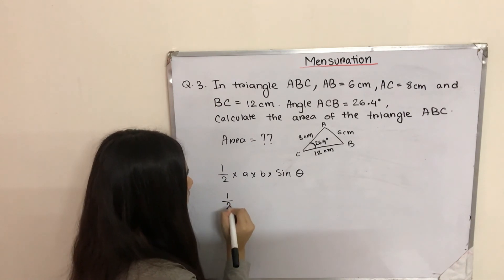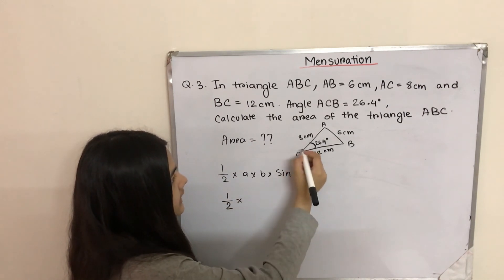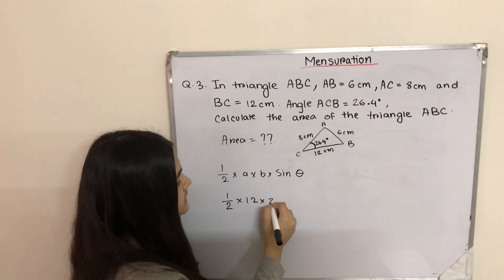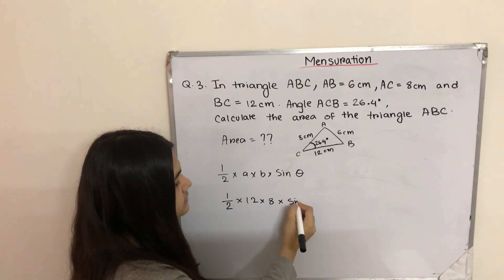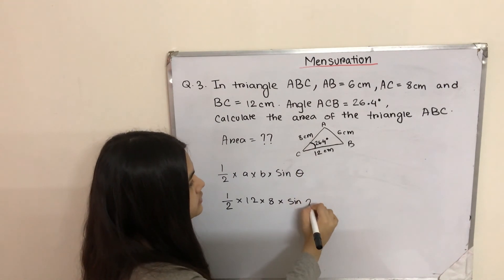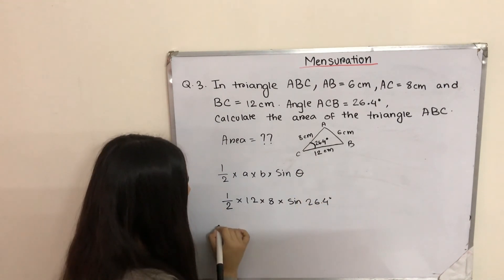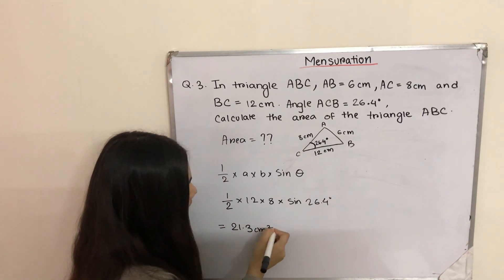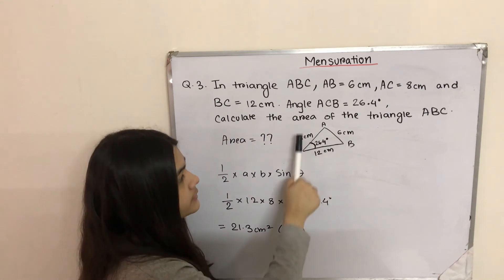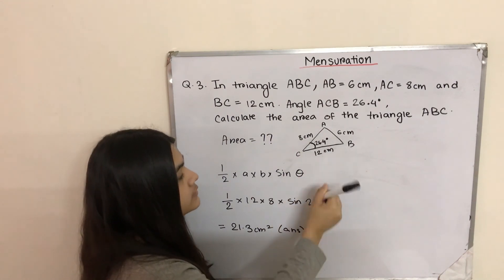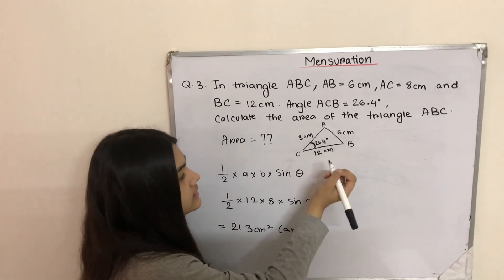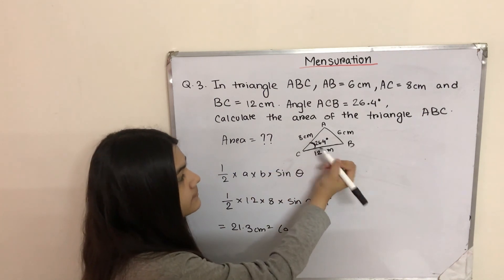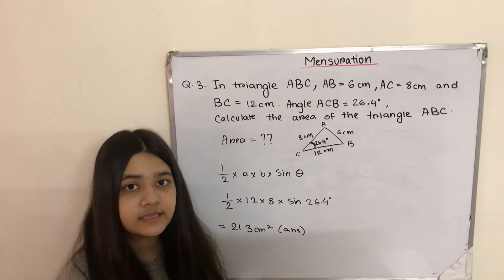Putting in the values: a equals 12 cm, b equals 8 cm, and sin theta is sin 26.4 degrees. We get 21.3 centimeters squared as our answer. Here we have three sides given but only one angle, so we take the two sides with their included angle — the angle between them is given.